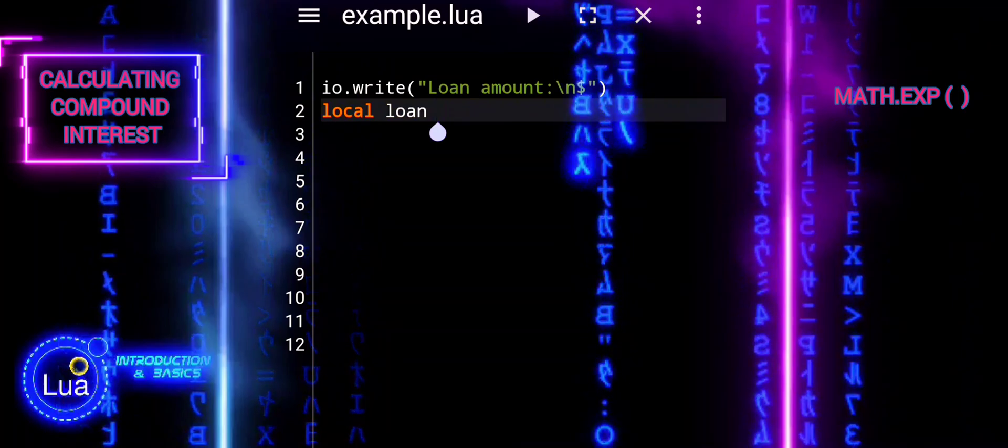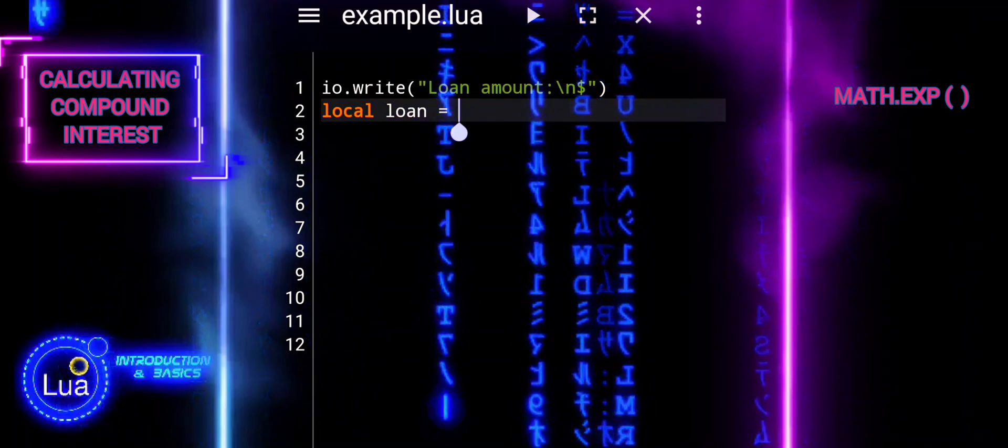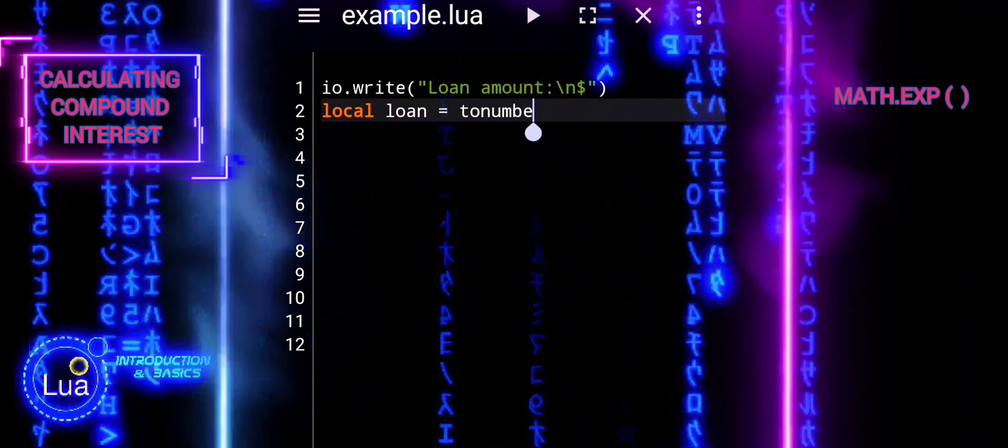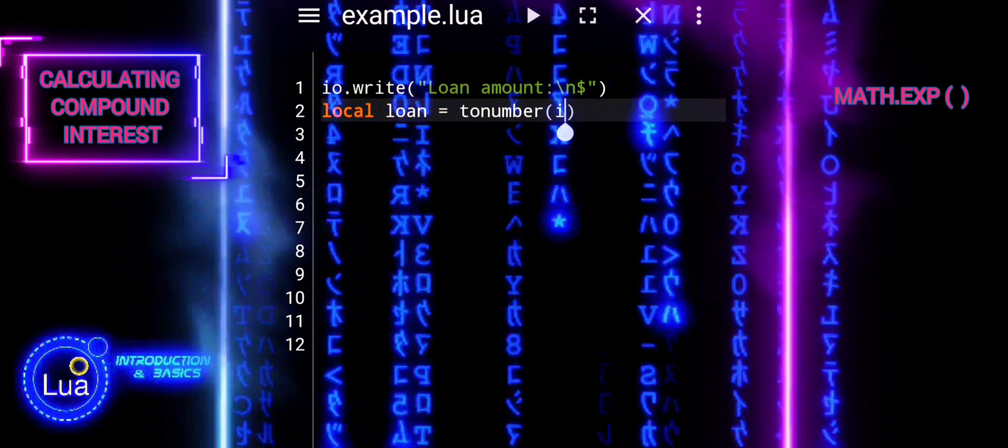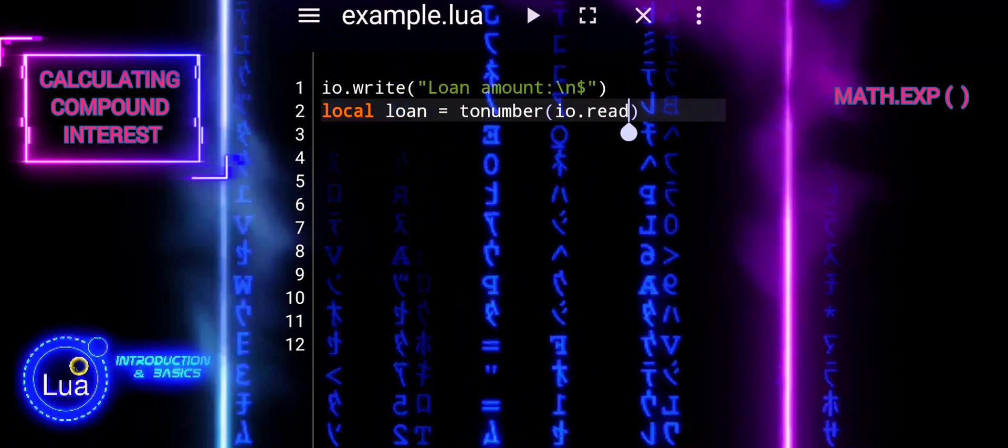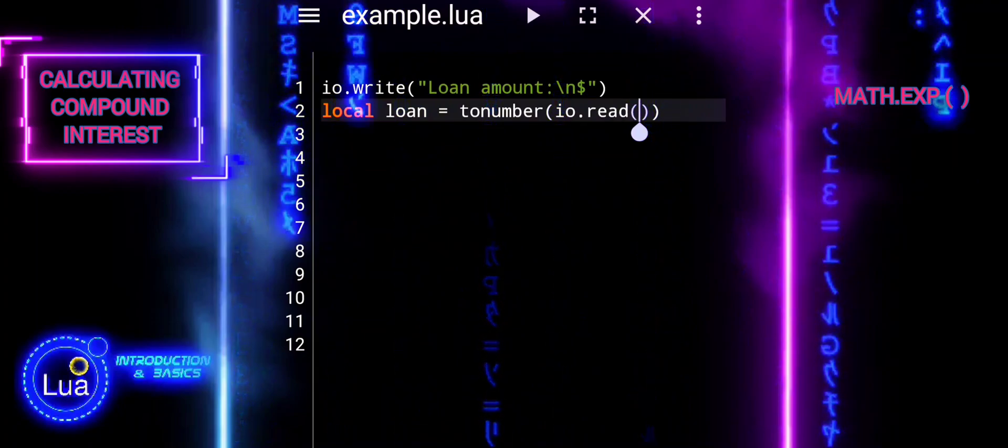This code segment prompts the user to input the loan amount and reads the input from the console. It then converts the input string into a numeric value using the tonumber function, allowing for mathematical operations later in the program.